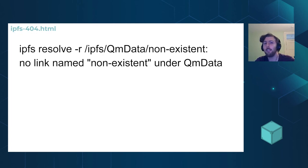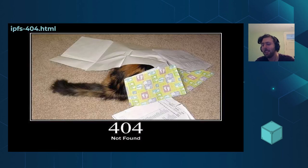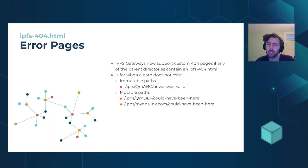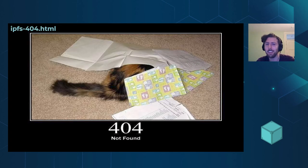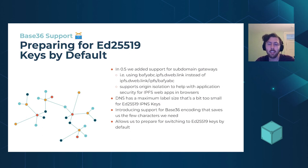IPFS 404: if you've ever gotten a bad link — one that was never valid — you may have gotten a gross error message. Now you can have a much nicer error message. This isn't common for IPFS paths since they're immutable, but for mutable paths like IPNS or DNSLink it's entirely possible: content could have been there a week ago but changed. Having a nicer error message has been a long-requested feature.